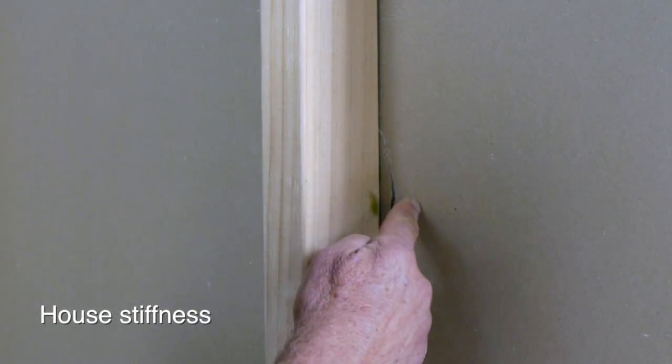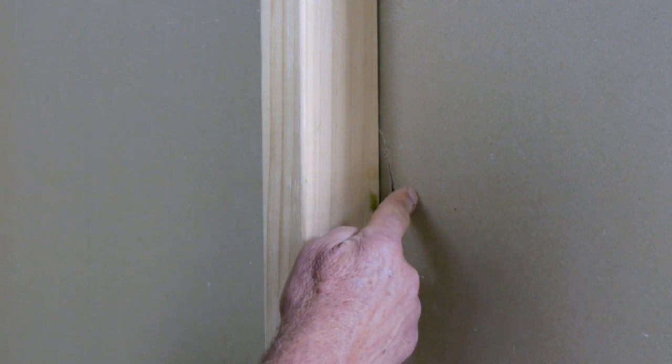We have also looked at the effect on house stiffness if the glued plasterboard cracks have failed, as they have here in this particular example.